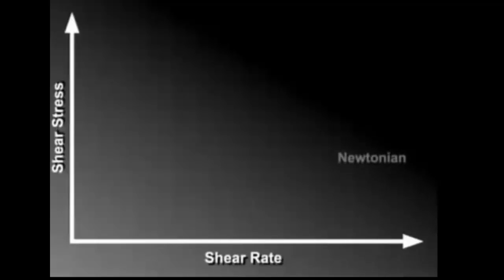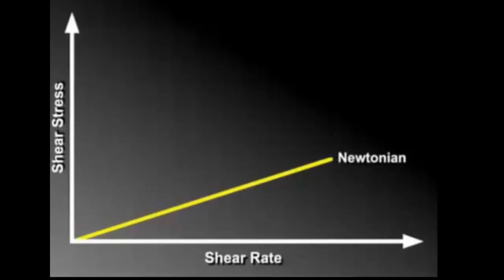The simplest behavior is a Newtonian fluid. Since the viscosity is constant, the slope is constant and the curve is a straight line.